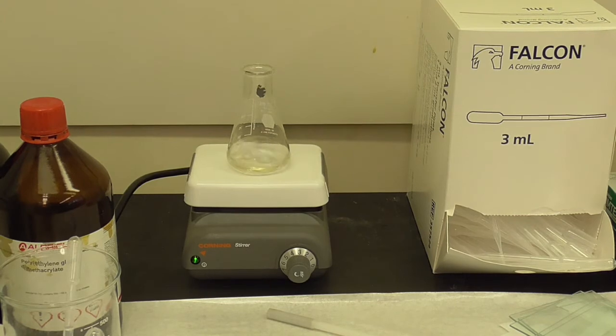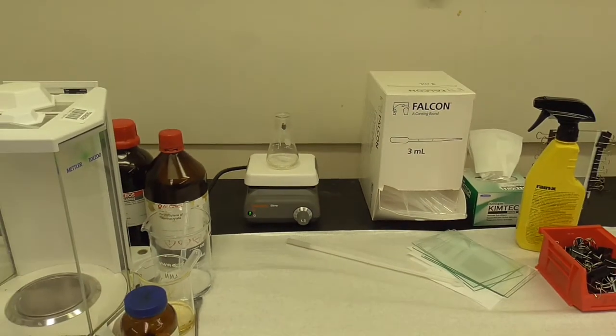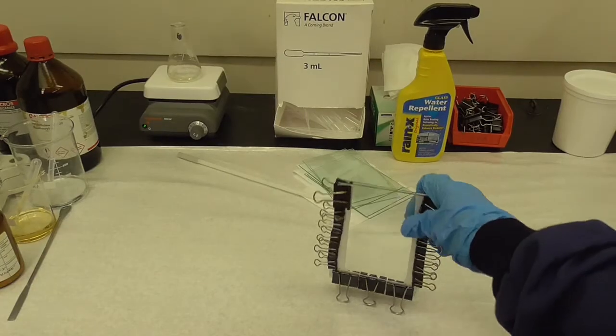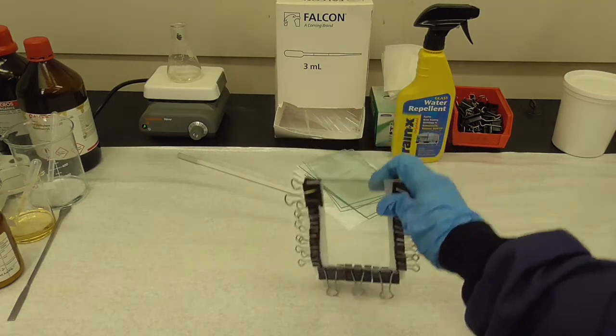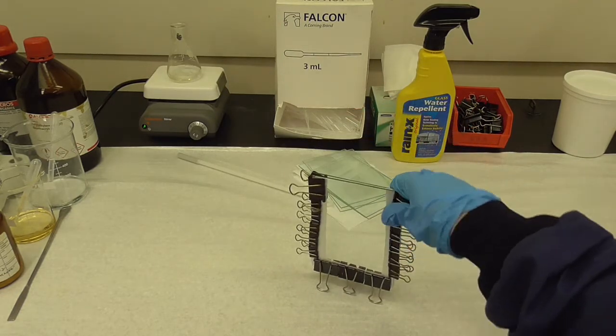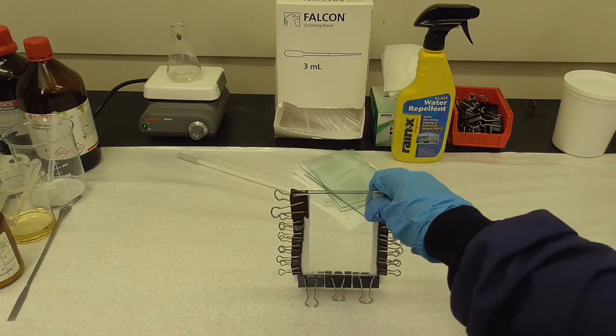Now while that is mixing we'll make our mold for the polymer. Here is an example of the mold. We're going to make two sheets of glass with the Teflon separator and then clip together with these binder clips.